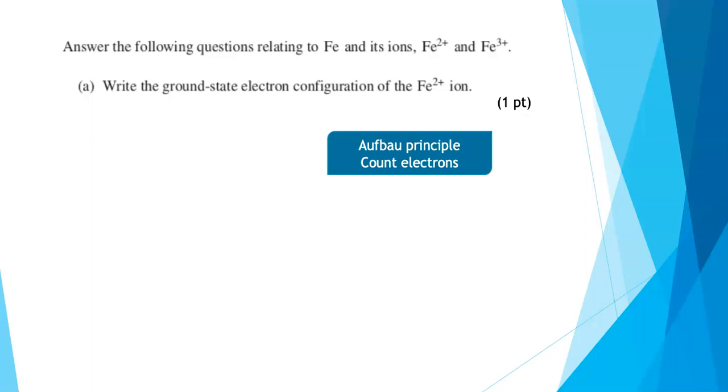What you have to remember here is the Aufbau principle. We fill orbitals in order of increasing energy. It is a plus two ion, so we need to make sure we count electrons, that we lose two electrons, and represent that properly in our electron configuration. So we have to write 1s2, 2s2, 2p6, 3s2, 3p6, 3d6.